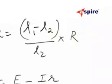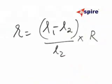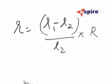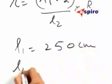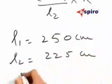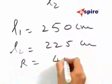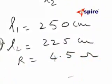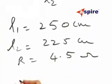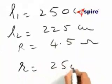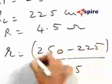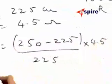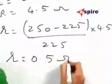Now in this problem L1 is equal to 250 and L2 is equal to 225. So small r equals 250 minus 225 divided by 225 into 4.5, which comes out to be 0.5 ohm. Answer 3.